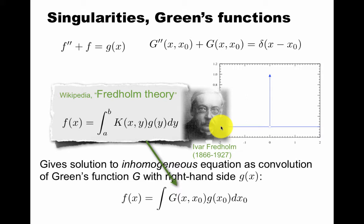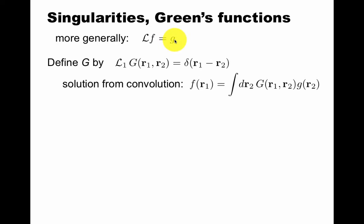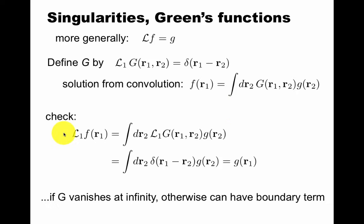More generally, this is a differential operator L on f gives us a right-hand side g. Define Green's function by this equation. You get the solution from convolution. Now this could be in three dimensions or whatever. How do we check this? Act with this operator on f. This operator is defined acting on the first argument. So when you do that, you just get this delta function by definition of this equation. And by definition of the delta function in three dimensions, we integrate this. You'll get g. Sometimes we put d3r here. If g vanishes at infinity, we get this. There can be extra terms that have to do with boundary conditions. But in this simple context, we see that defining G like this gives us a solution of the inhomogeneous equation like this.